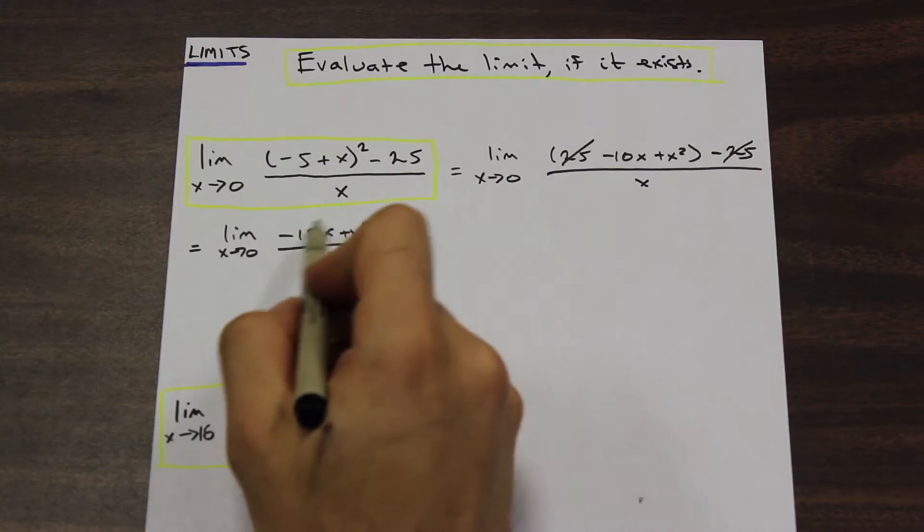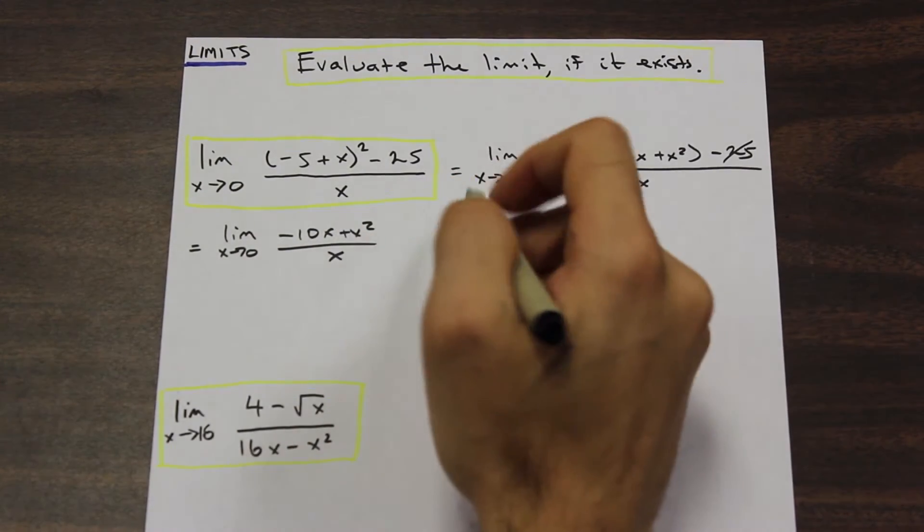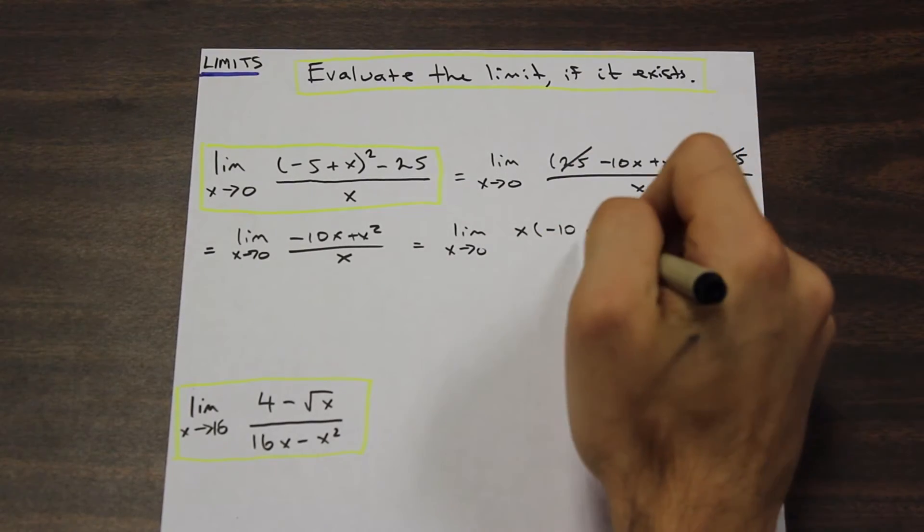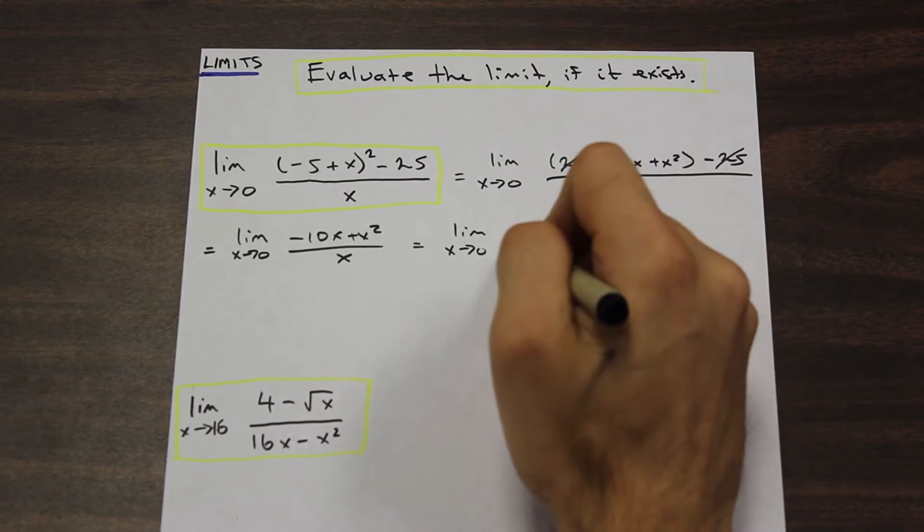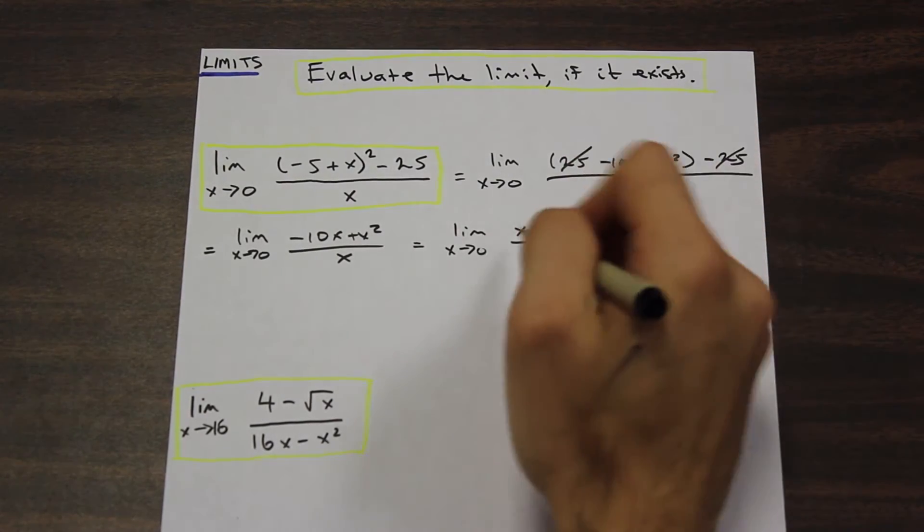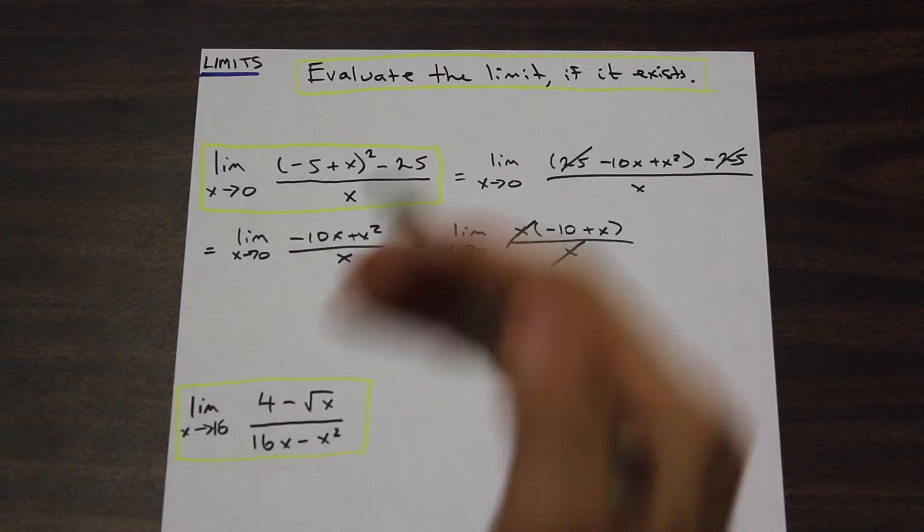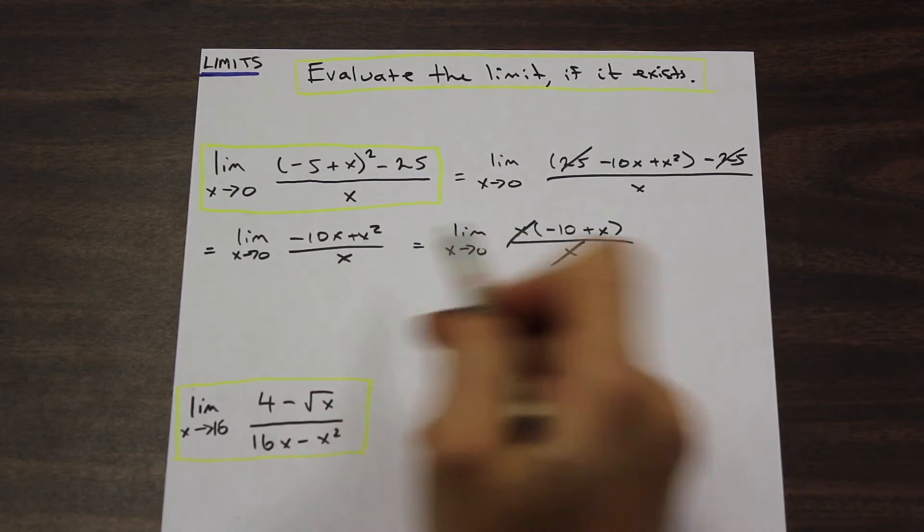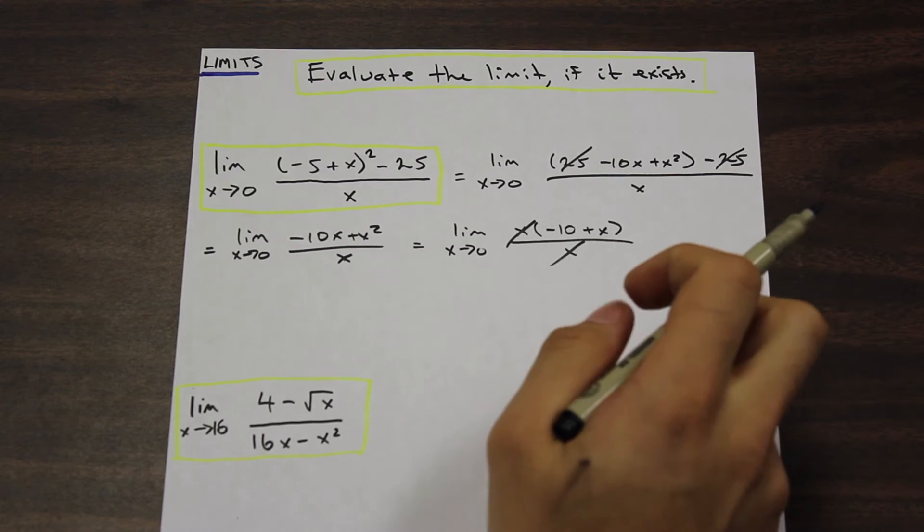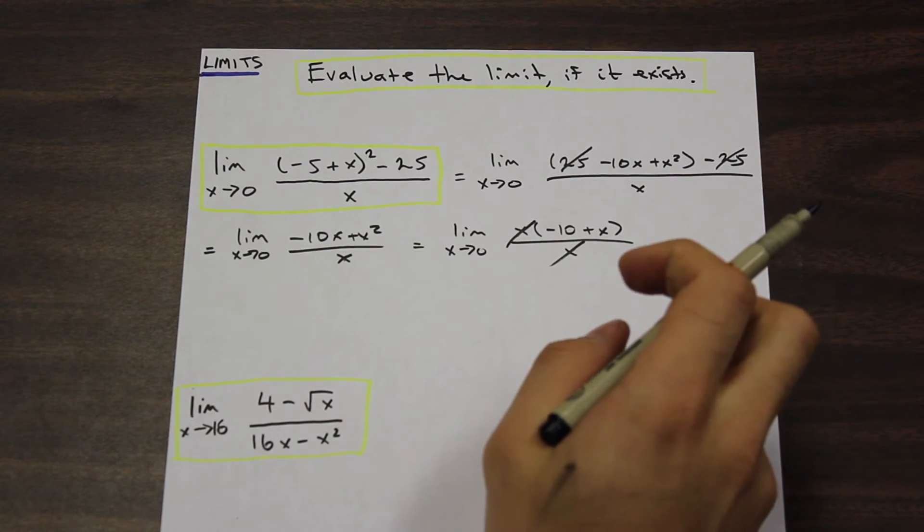And immediately what we can see is that we can factor an x out from the top of this fraction. We have x times (-10 + x) over x, and as we can see, we can cancel that x. Common theme in these types of problems. So we want to get rid of this x, or at least make it so that we're not dividing by zero. That's going to be our goal.